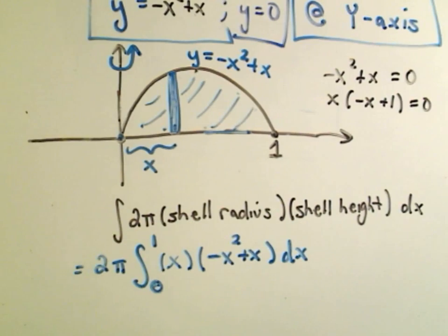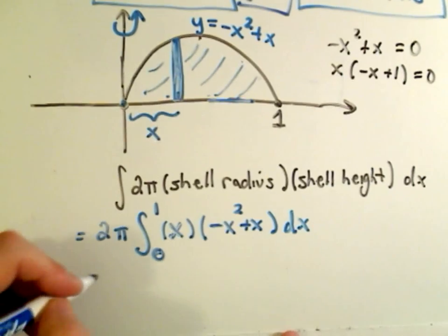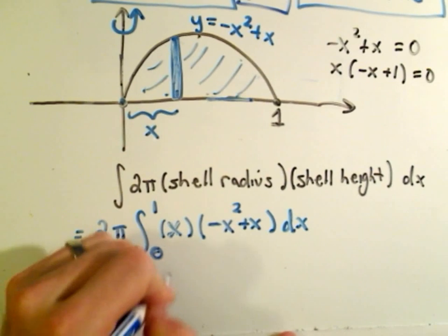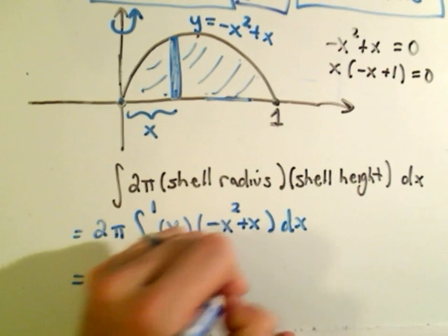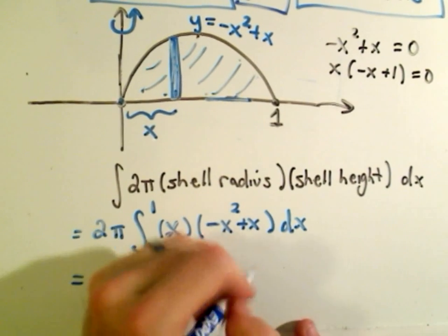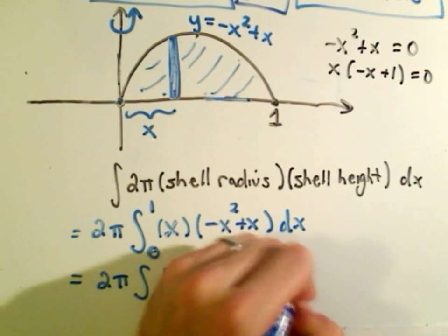So if I was actually going to calculate this out, I would just distribute the x, make it negative x-cubed plus x-squared, I'm already integrating, plus x-squared, dx.